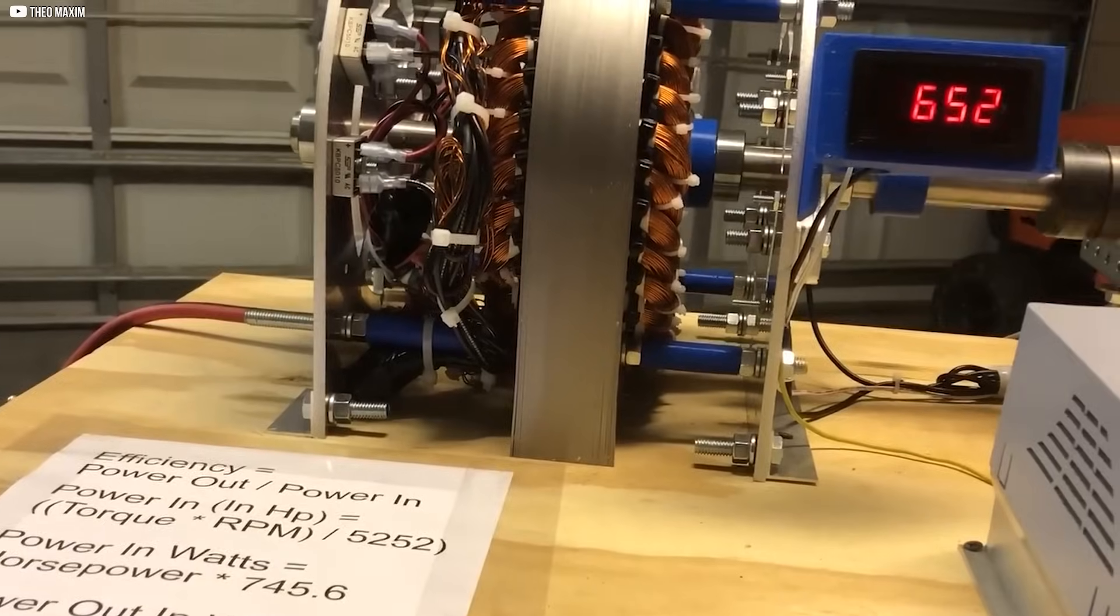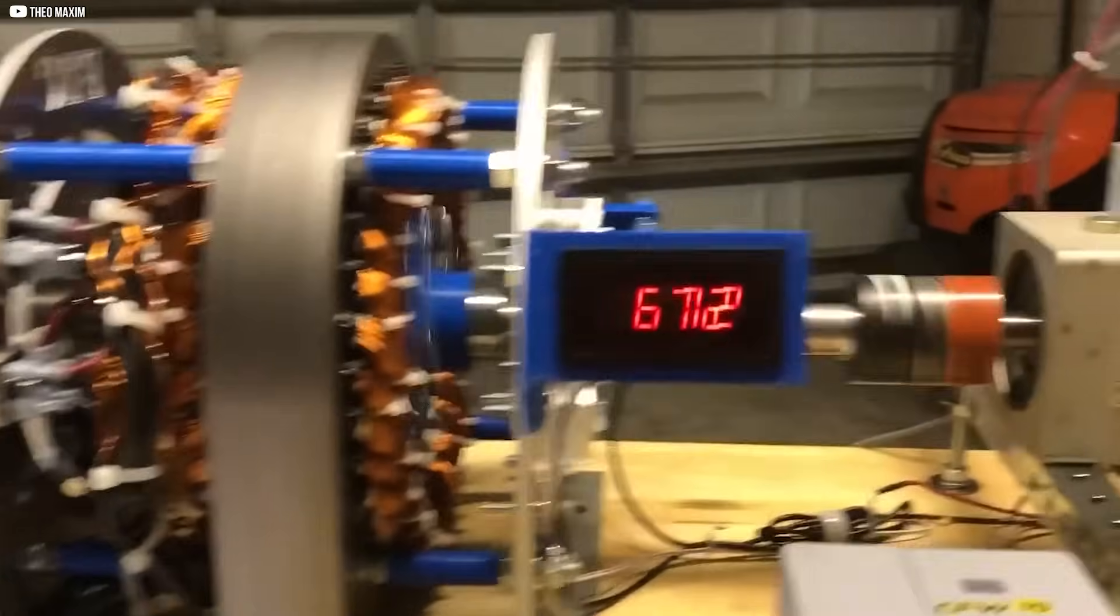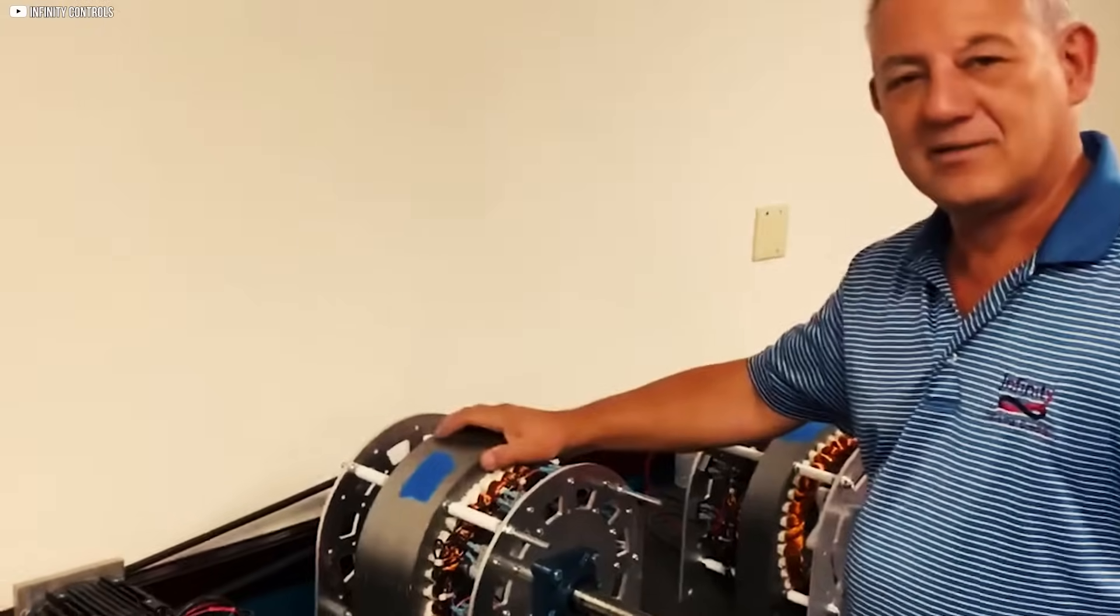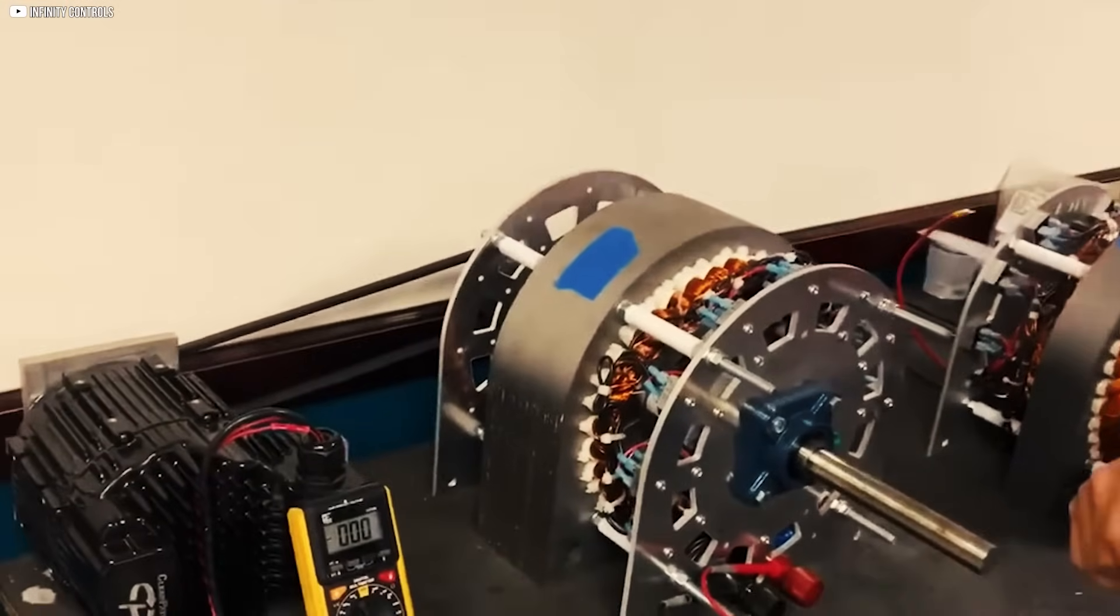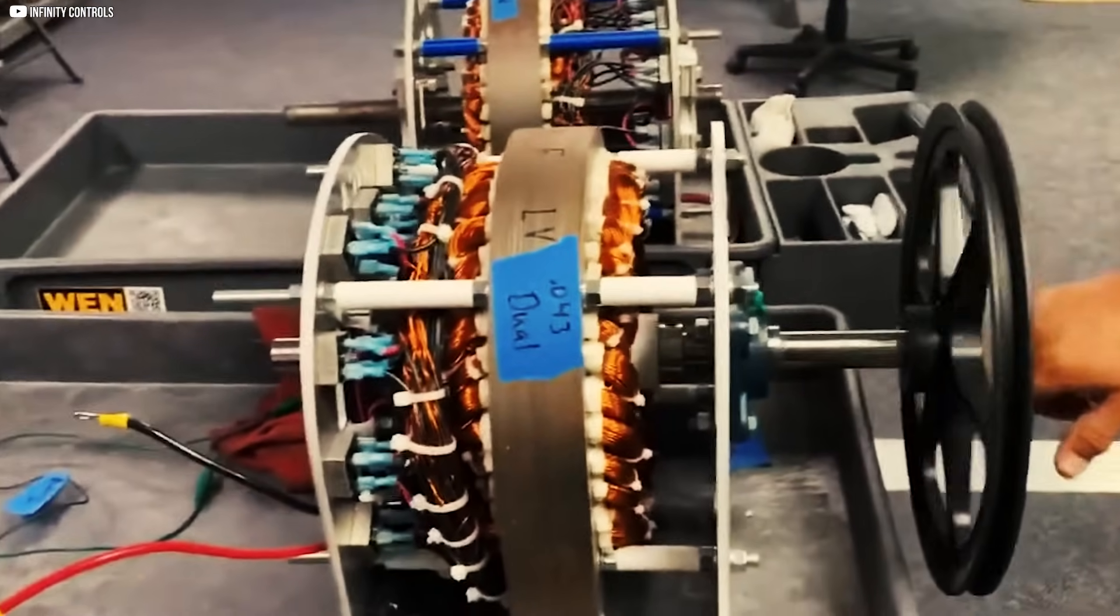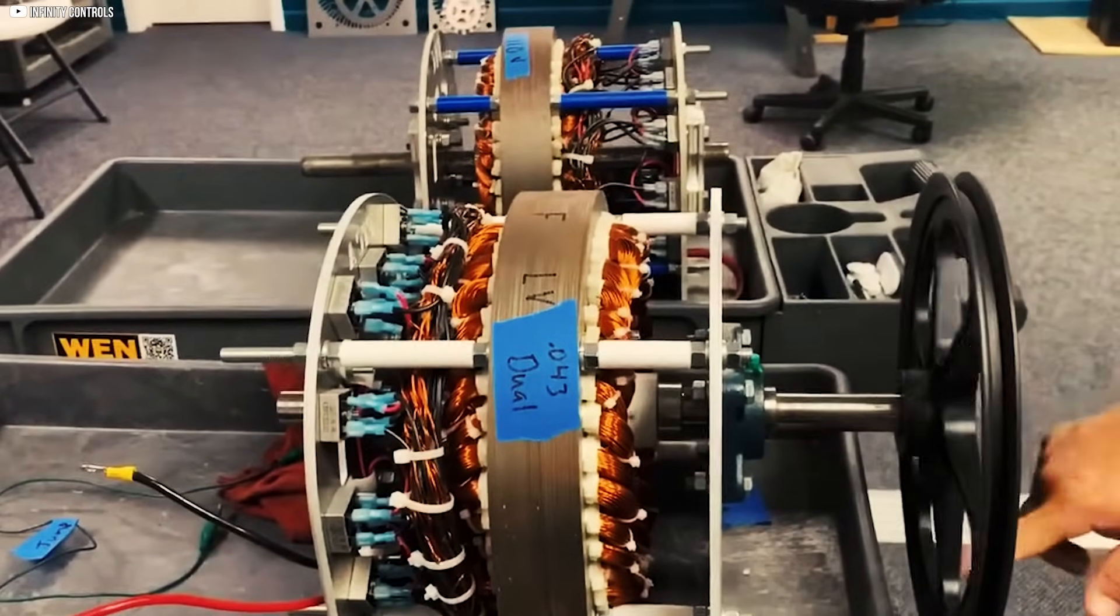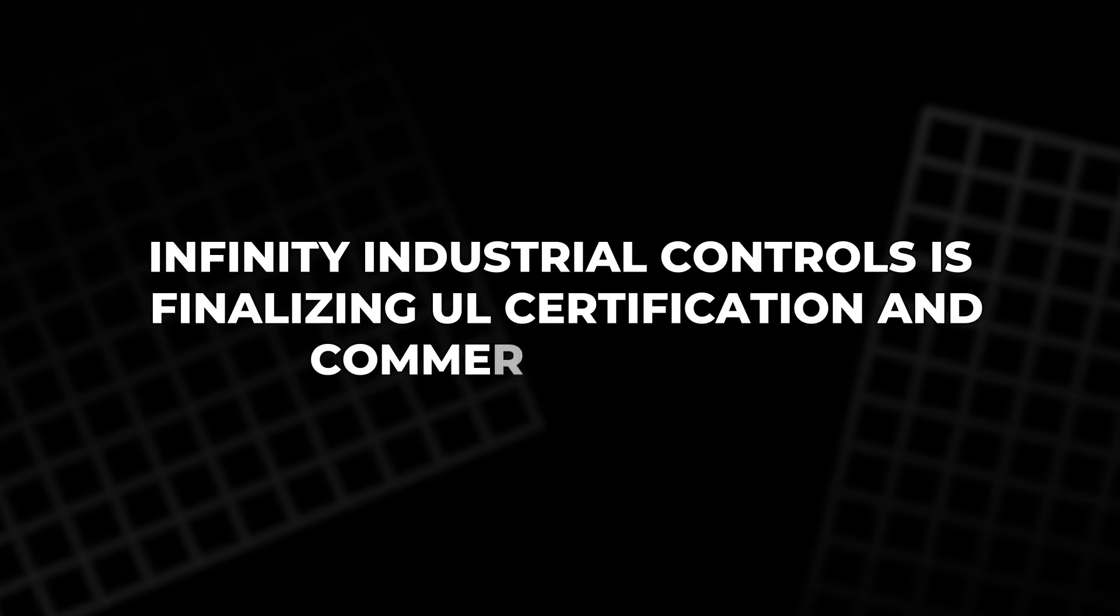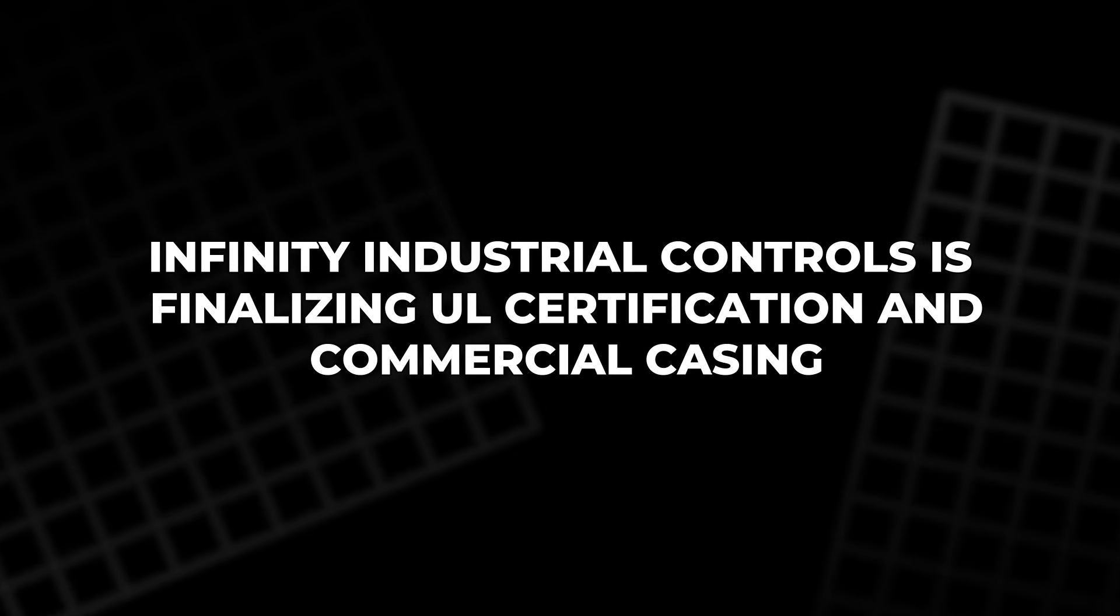The iGenerator is no longer a prototype. It's in full production, offering 15 to 250 kilowatt models that scale to megawatt-level power. Ideal for homes, industries, or off-grid setups. It delivers unmatched efficiency. Infinity Industrial Controls is finalizing UL certification and commercial casing.